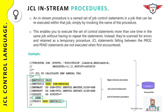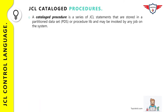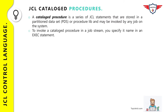The maximum number of in-stream PROCs that can be included in a JCL is 15. A catalog procedure is a series of JCL statements stored in a partitioned dataset or PROC library. Catalog procedures can be invoked by any JCL on the system, whereas an in-stream procedure can only be invoked from the JCL in which it is defined — that is the basic difference between in-stream PROC and a catalog procedure.